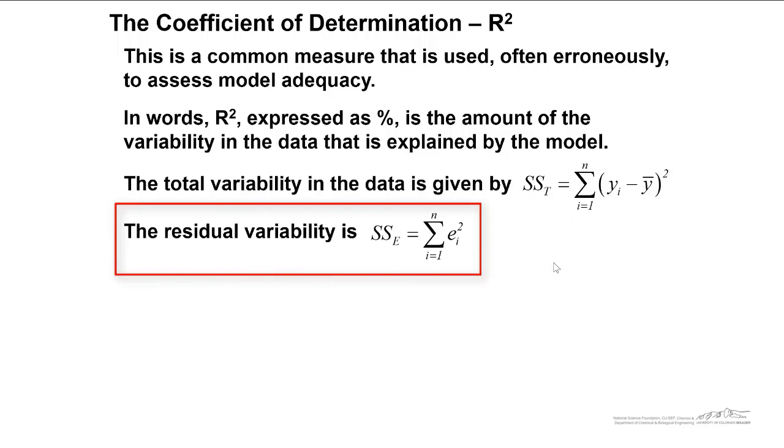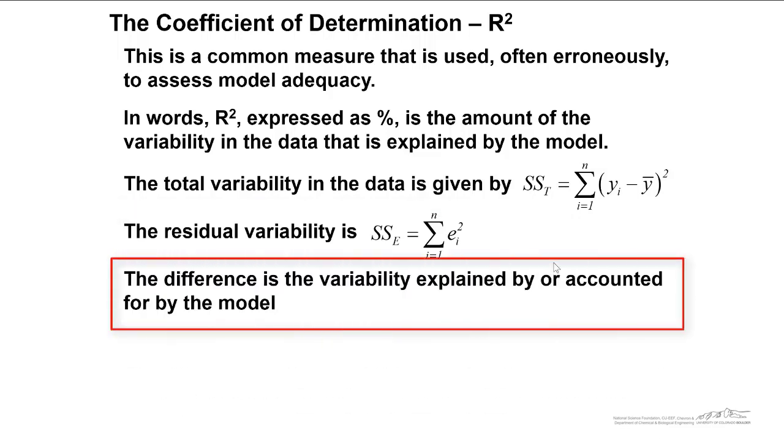The difference between SST, the total variability in the data, and SSE is SSR, the regression sum of squares. This is the variability that is explained by or accounted for by the model.